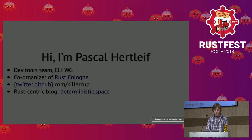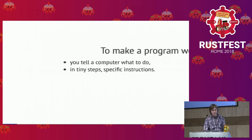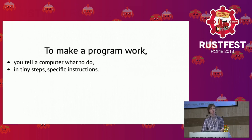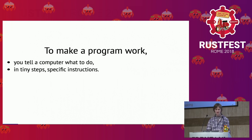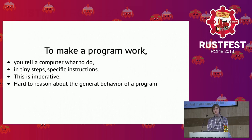The very, very beginning. What is a computer program? To make a program work, you basically have to tell a computer what to do step by step — step by very tiny step. This is called imperative programming, and if you do enough of this, it's very hard to reason about the general behavior of your program.